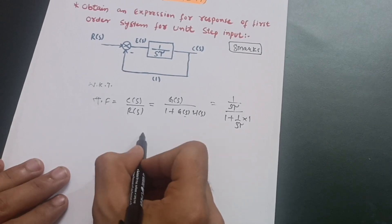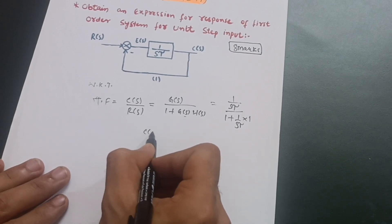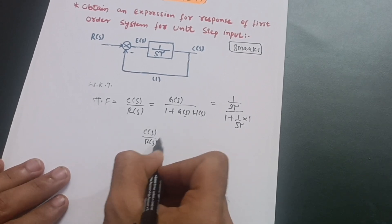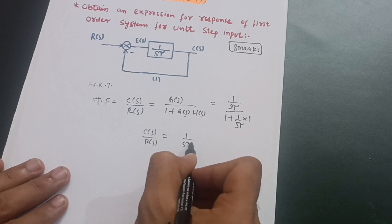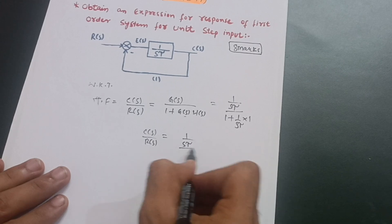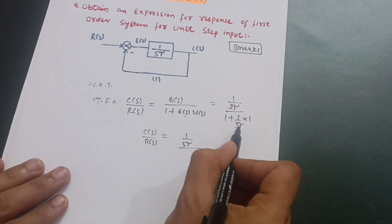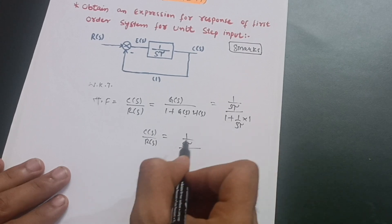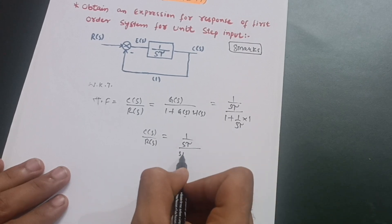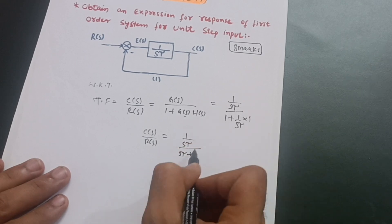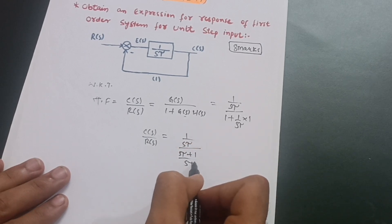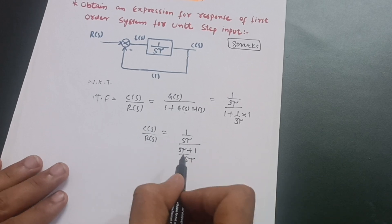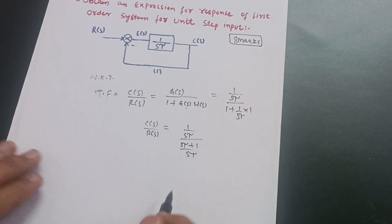After simplification, the S·τ terms cancel and we get the transfer function C(S)/R(S) = 1/(S·τ + 1). This is our closed loop transfer function for the first order system.